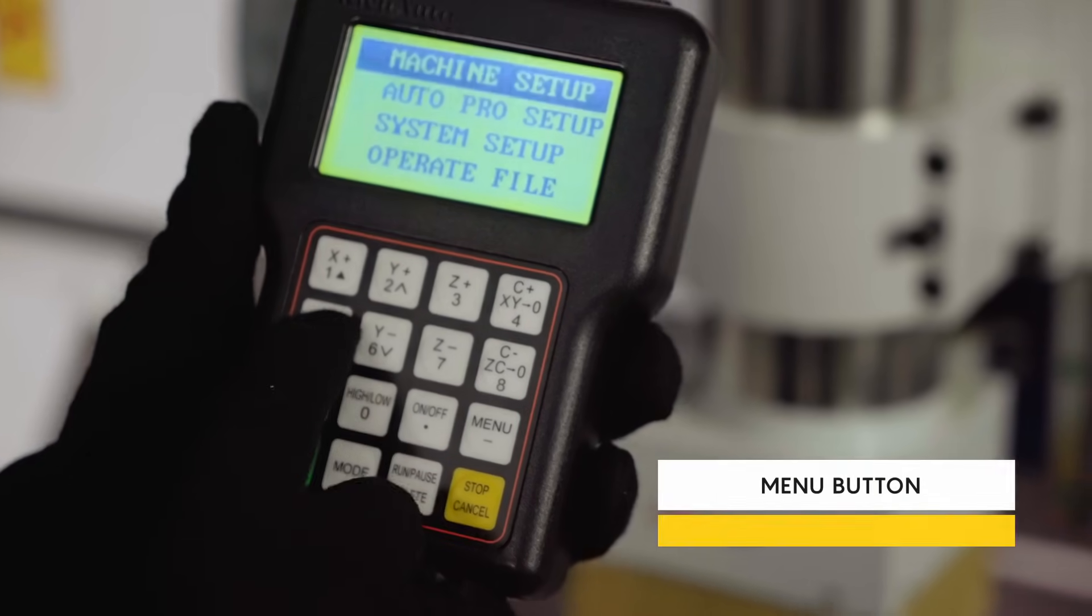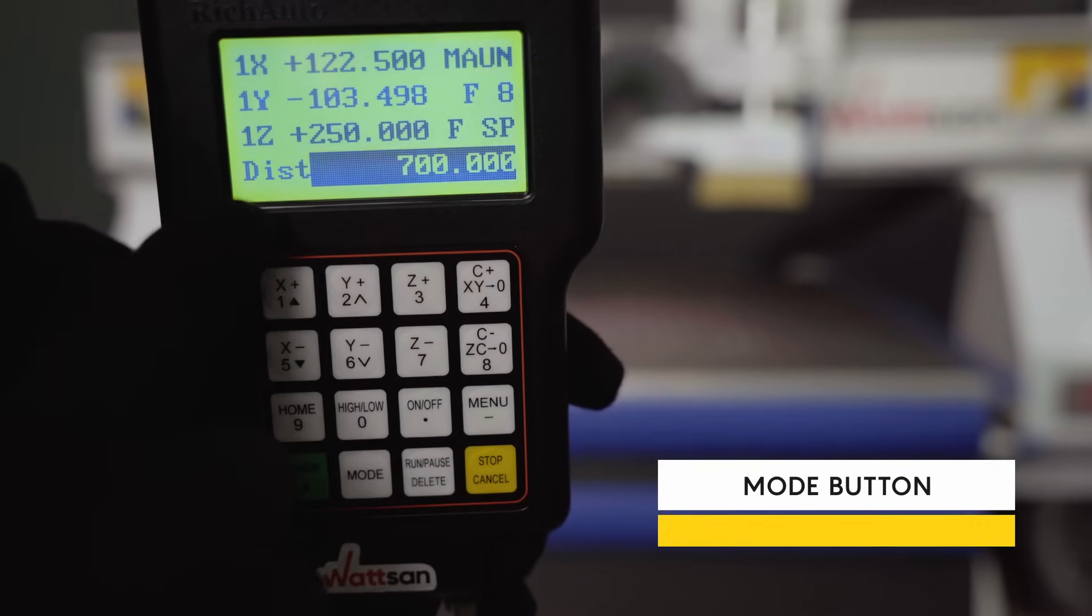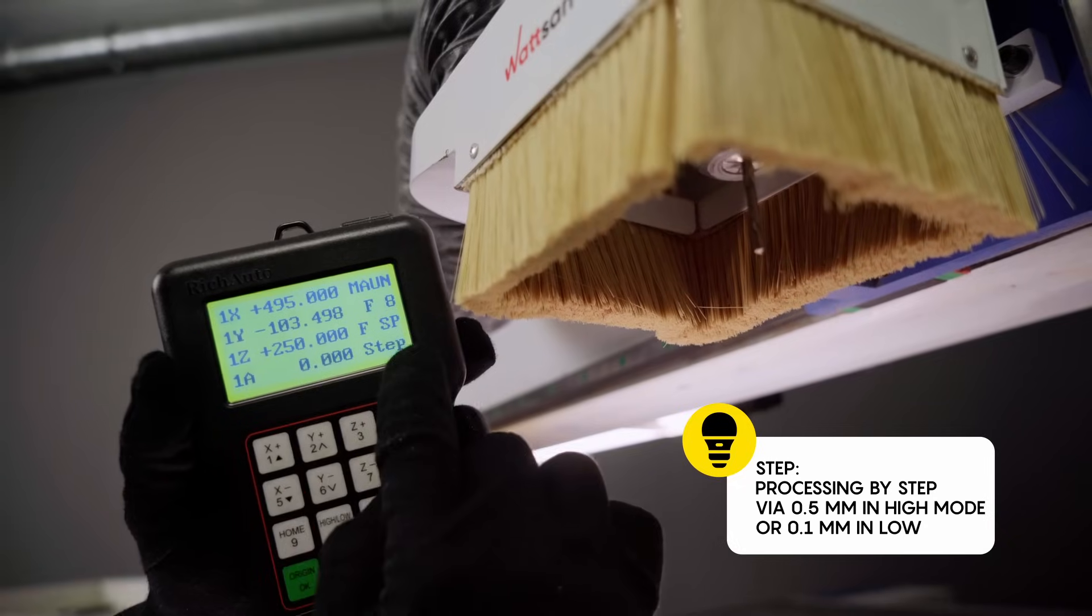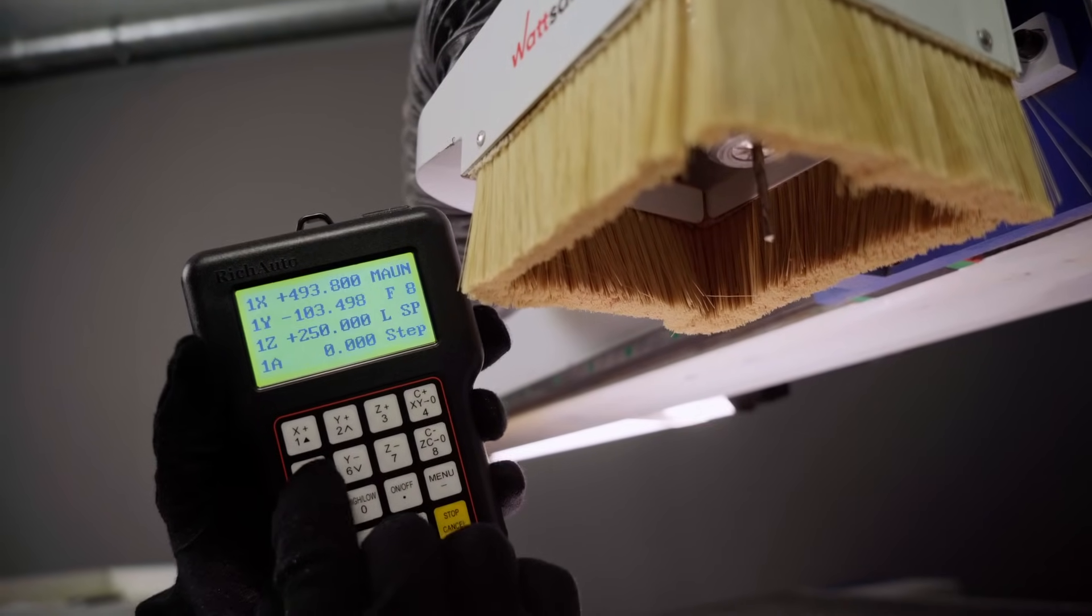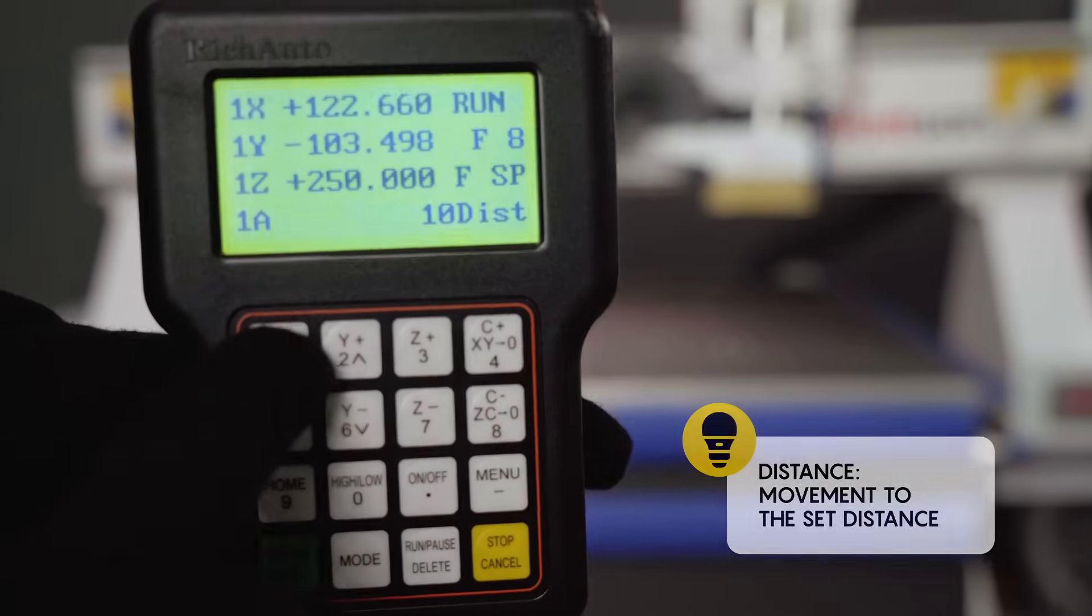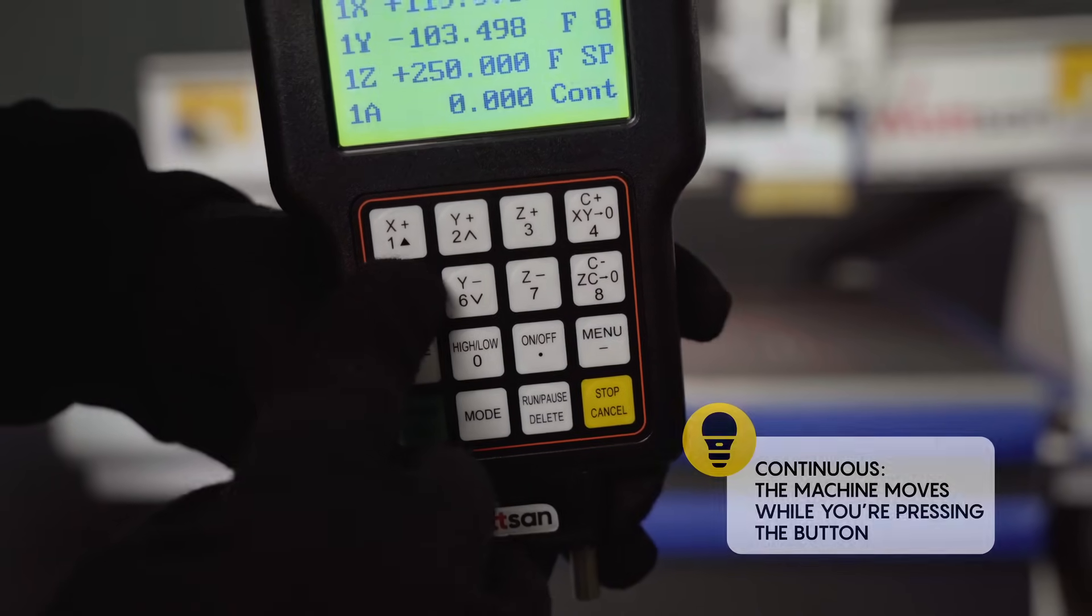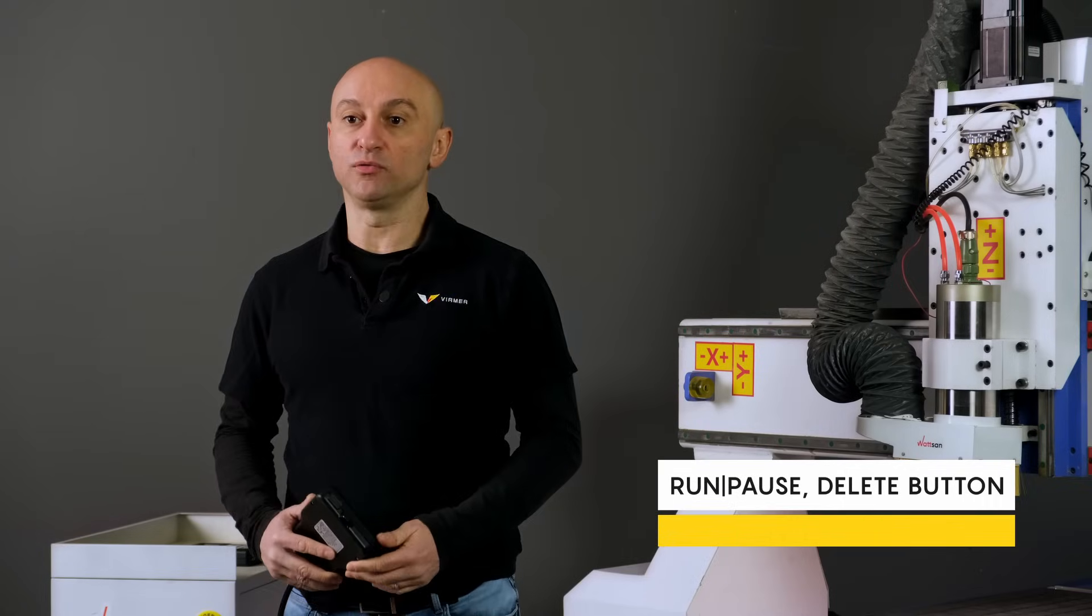Using Mode, you can manually switch between types of milling operations: step processing by step via 0.5 millimeters in high mode or 0.1 millimeters in low distance movement to the set distance. Continues—the machine moves while you're pressing the button. Run/Pause/Delete: here you might start and pause the work and also delete unnecessary symbols during entry. Stop/Cancel allows stopping the process.